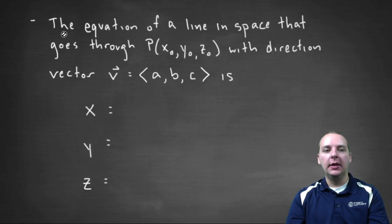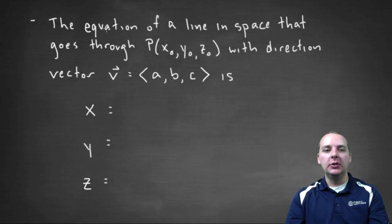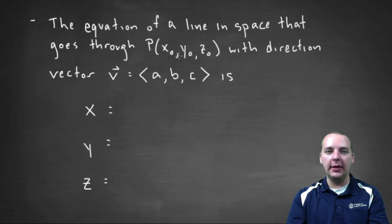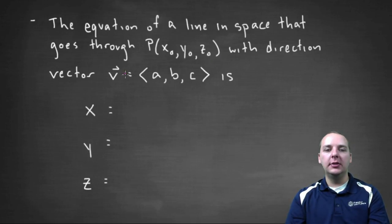Alright, so here's the formula for writing the equation of a line. The equation of a line in space, three-dimensional space, that goes through a certain point that's hopefully provided to you, we'll call it point P, which is x-naught, y-naught, z-naught, that has a direction vector pointing it towards the vector <a, b, c>, is blank, and I'm going to fill it in for you.